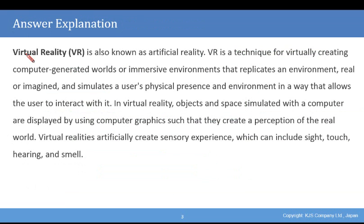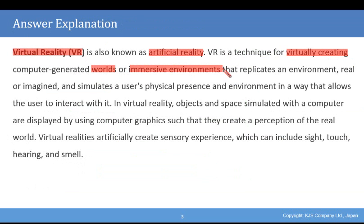So let's have a look at our definition for virtual reality, or VR. It is also known as artificial reality. VR is a technique for virtually creating computer-generated worlds, or immersive environments, that replicates an environment, real or imagined, and simulates a user's physical presence and environment in ways that allow the user to interact with it.